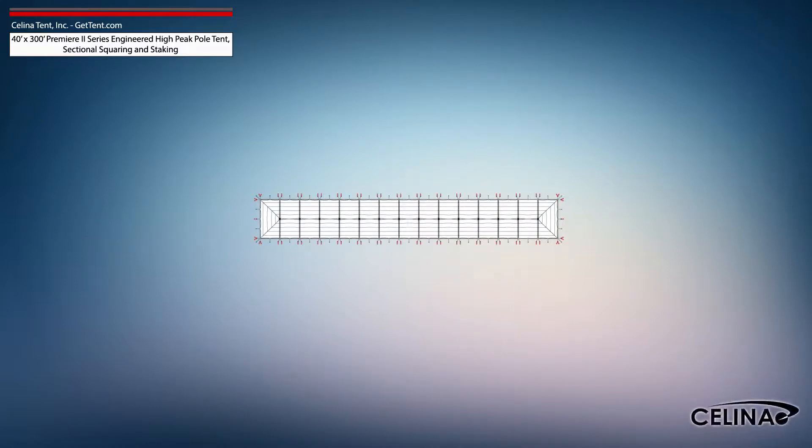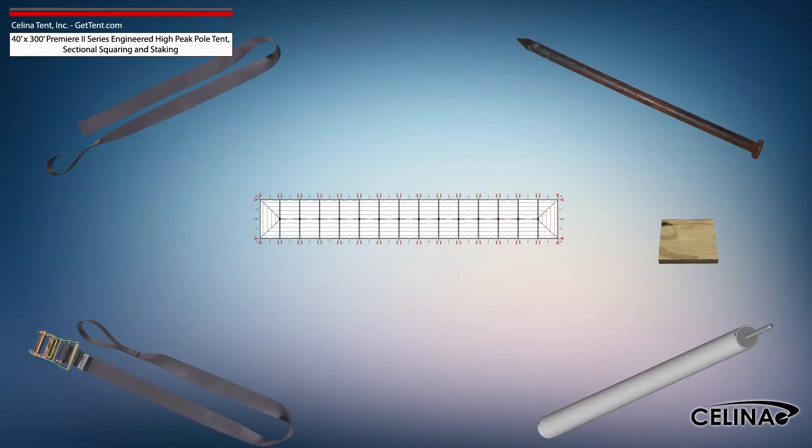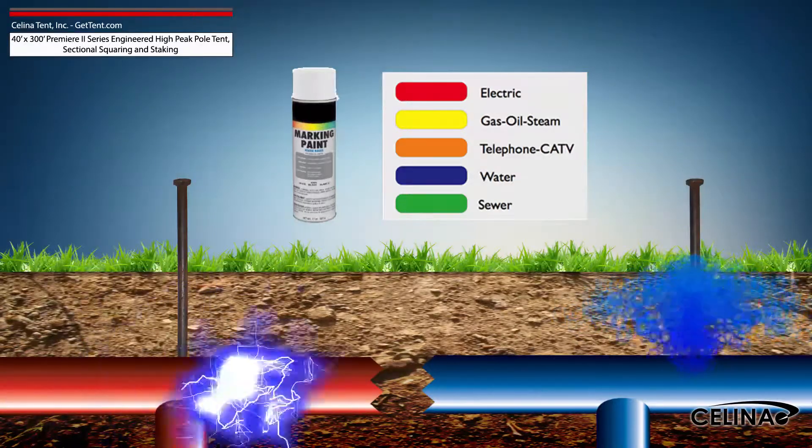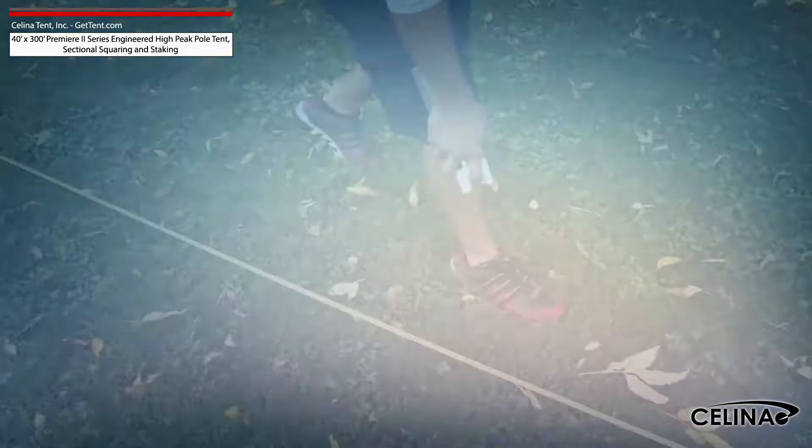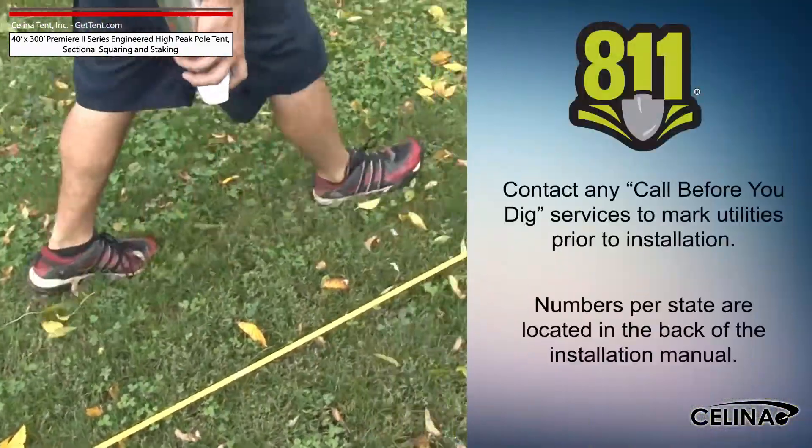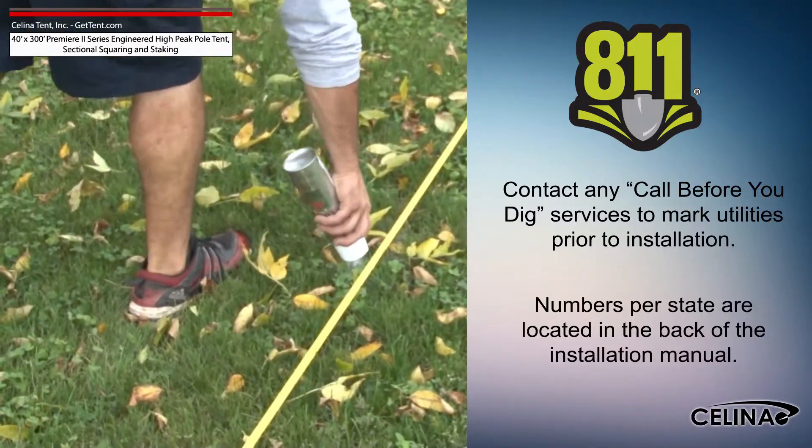Tent squaring allows the installer to accurately place all tent hardware and install tent stakes prior to beginning setup. It helps them avoid any marked underground utilities. Utilities must be marked by your state's local utility services prior to any tent installation.